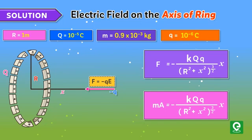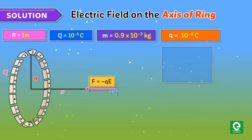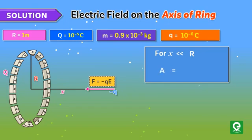So a = -kQqx/[m(R² + x²)^(3/2)]. Since x is negligibly small in comparison to R, therefore a = -kQqx/(mR³).